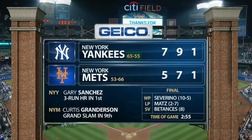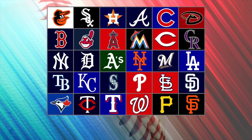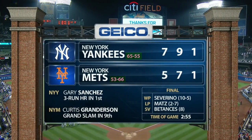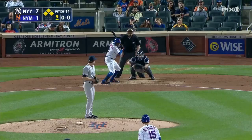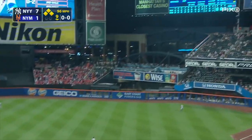You can notice the records: 65 wins and 55 losses for the Yankees, and 53 wins and 66 losses for the Mets. There are 30 teams in Major League Baseball, and each team plays 162 games during the regular season, which starts in early April and ends in late September. So here, on August 18, 2017, both teams had played 120 games. Two important events in this game: the home run that brought 3 points for the Yankees in the 1st inning, and the Grand Slam from Curtis Granderson for the Mets in the 9th inning.